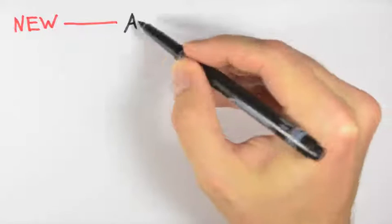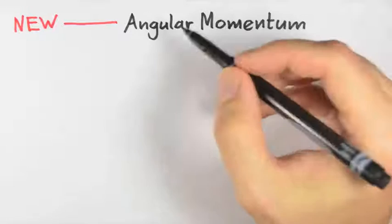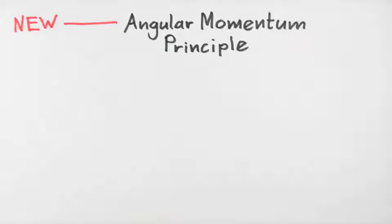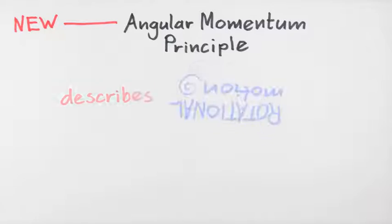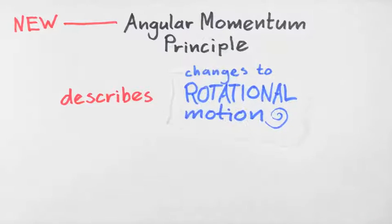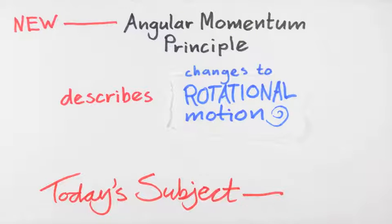We recently introduced a third fundamental principle, the angular momentum principle, that focuses on describing changes to rotational motion. Today we're going to describe the meaning of one of the key physical quantities in this principle: the torque.